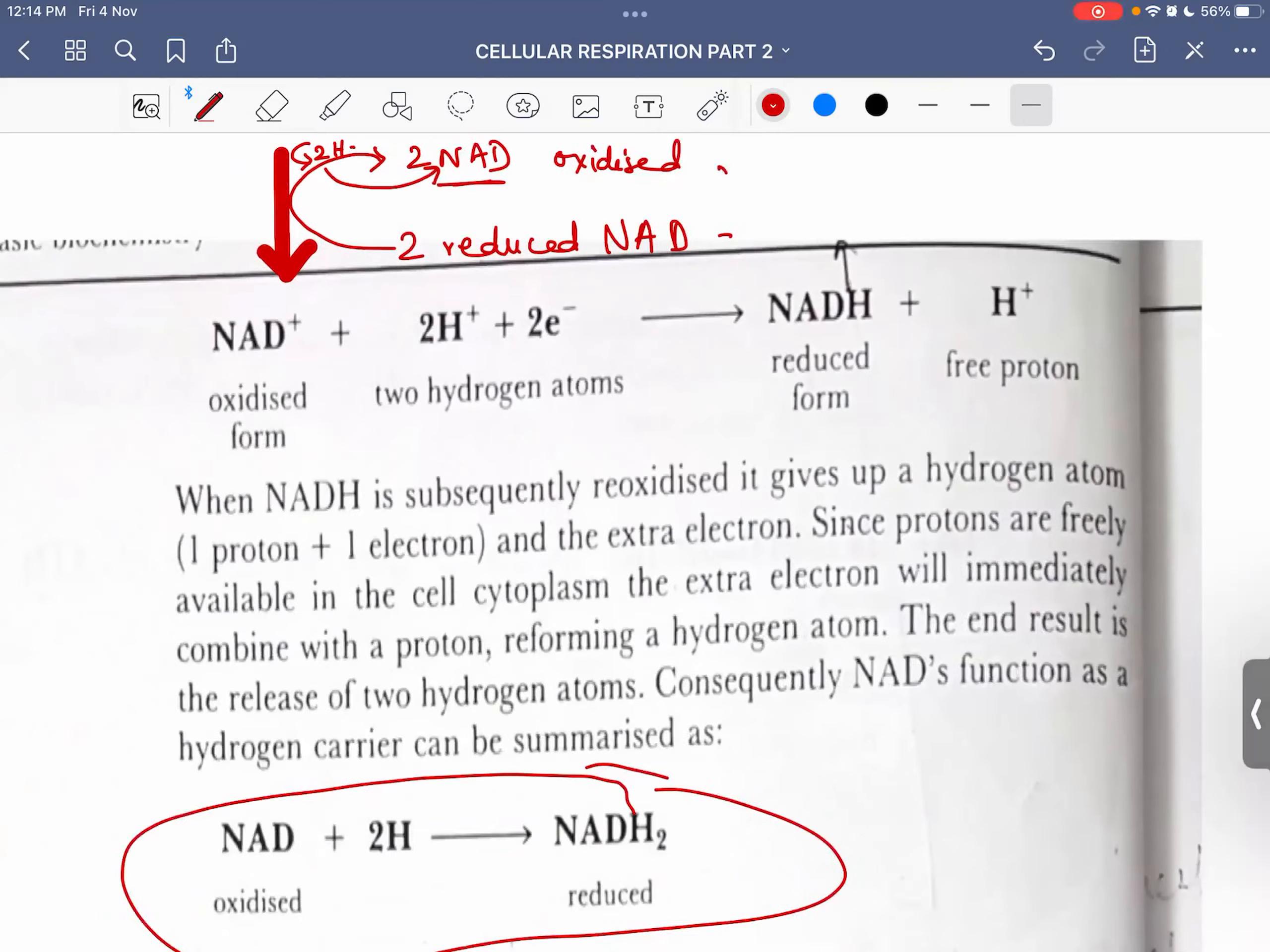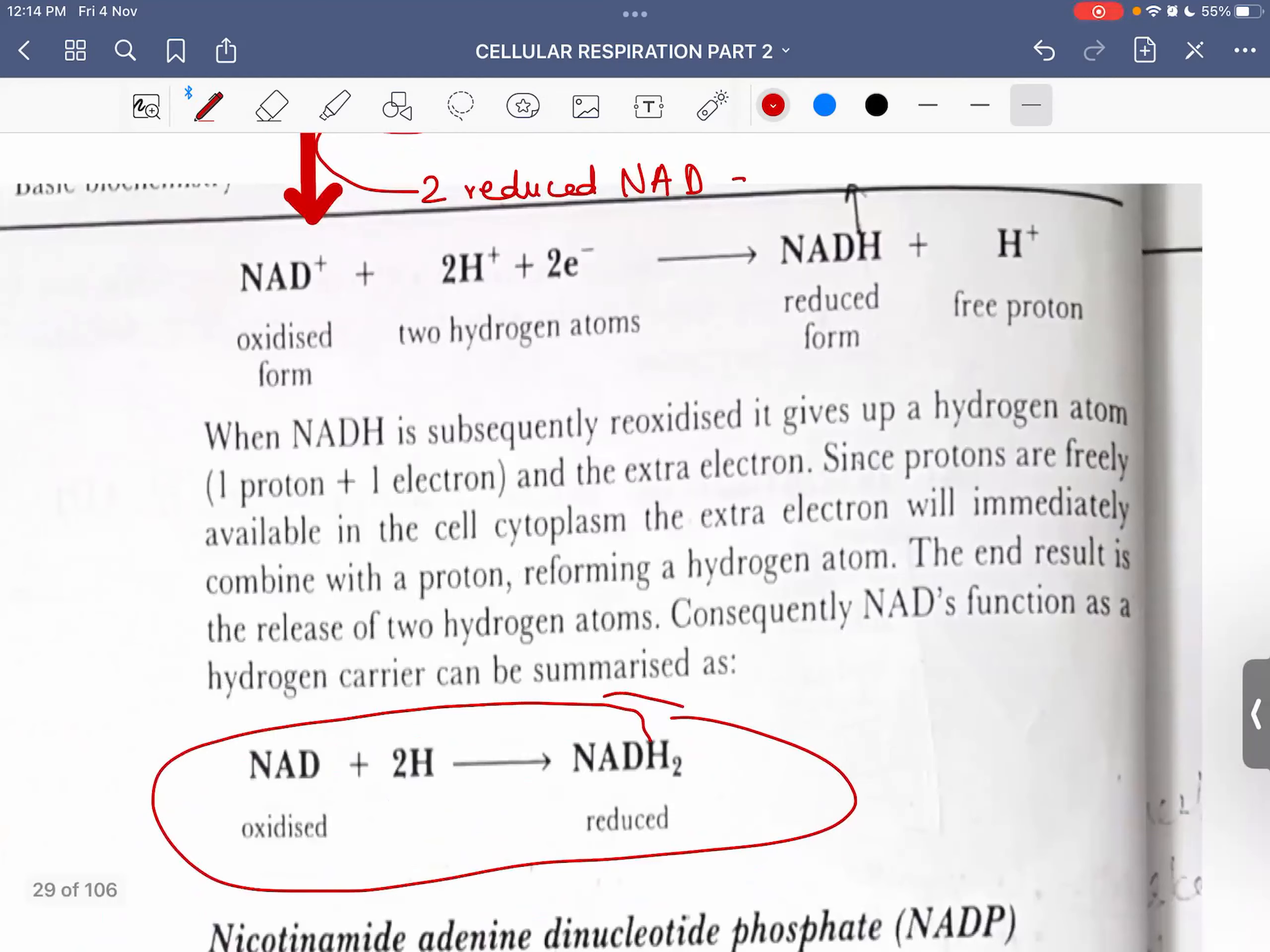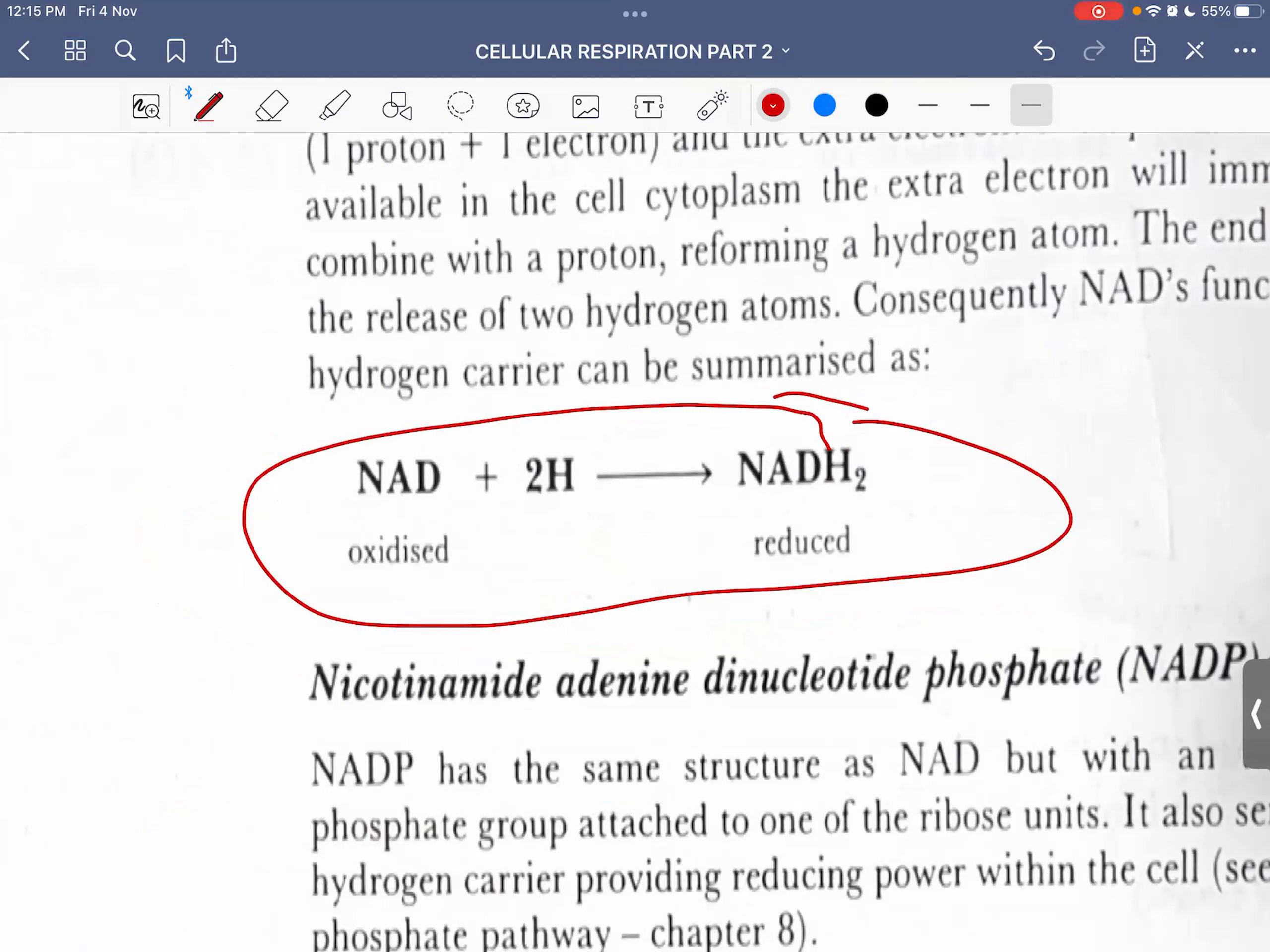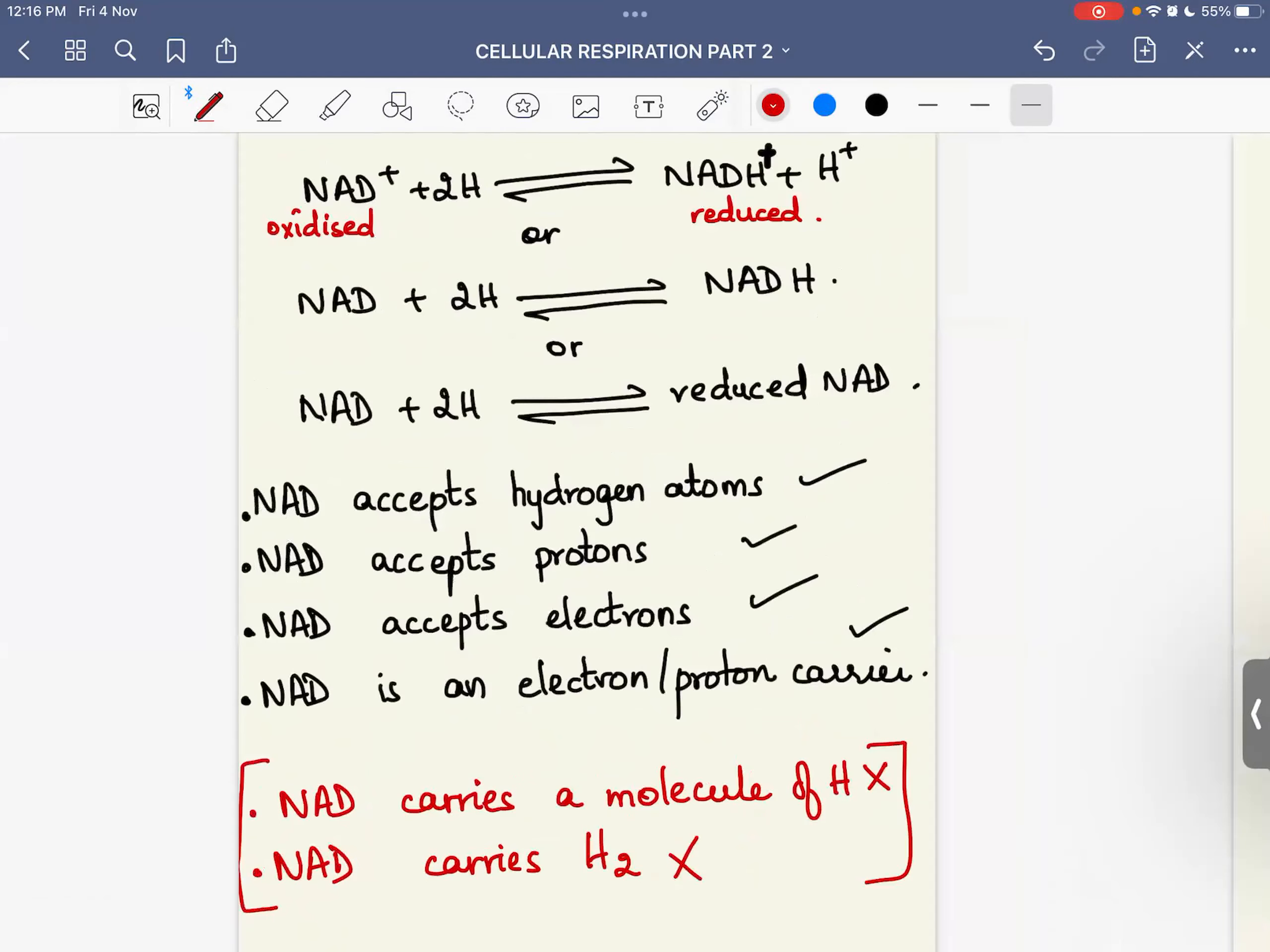What is the way to write down this equation? There are many ways. But today, in the updated book, we don't go into so much detail. The best and simplest way to write is like this: NAD plus 2 hydrogen atoms equals NADH2, or you can write NAD plus 2H equals reduced NAD or NADH. Instead of confusing you, I am going to share this slide with you. Go through it and read this carefully.